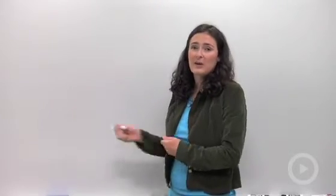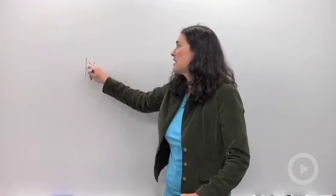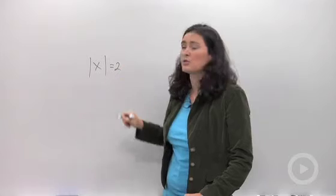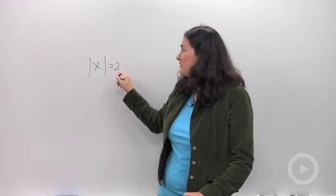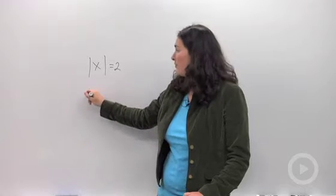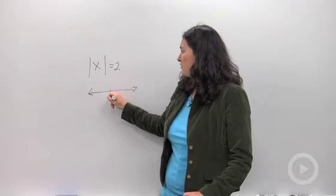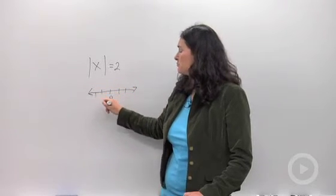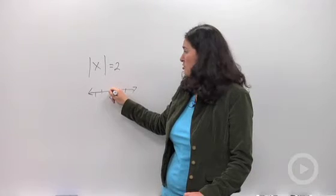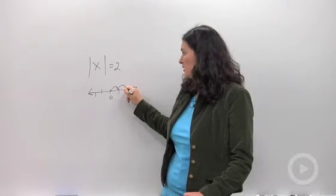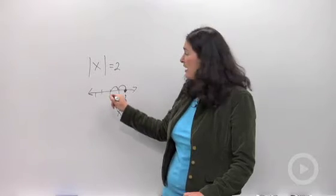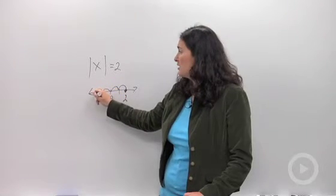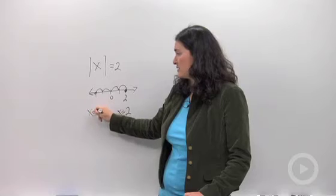I'm going to say that lots of times. So for example, if I were looking at a problem where the absolute value of x equals 2, that would mean x is a distance of 2 away from zero. If I draw a little picture of the number line, starting from zero I could go 2 in this direction and the answer x could be 2, or I could go 2 in this direction and have the answer x equals negative 2.